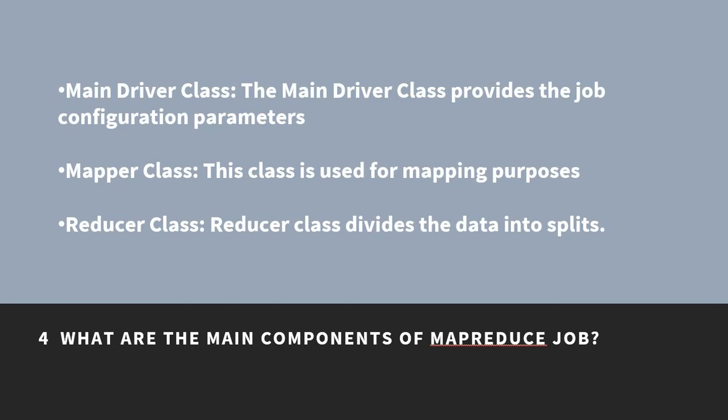The main components of a MapReduce job are the main driver class, mapper class, and reducer class. The main driver class provides the job configuration parameters. The mapper class is used for mapping purposes. The reducer class, as the name suggests, divides the data into splits.